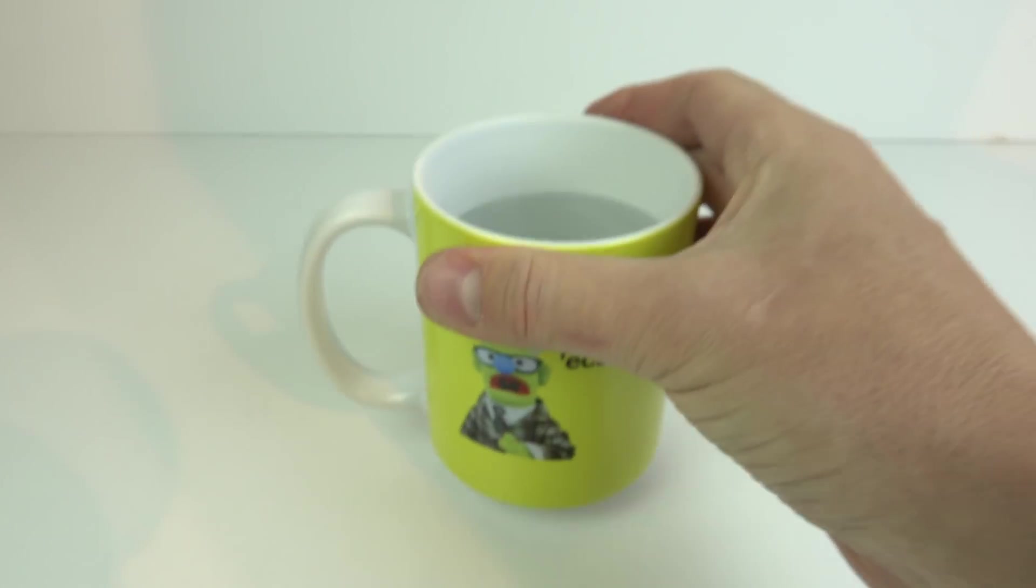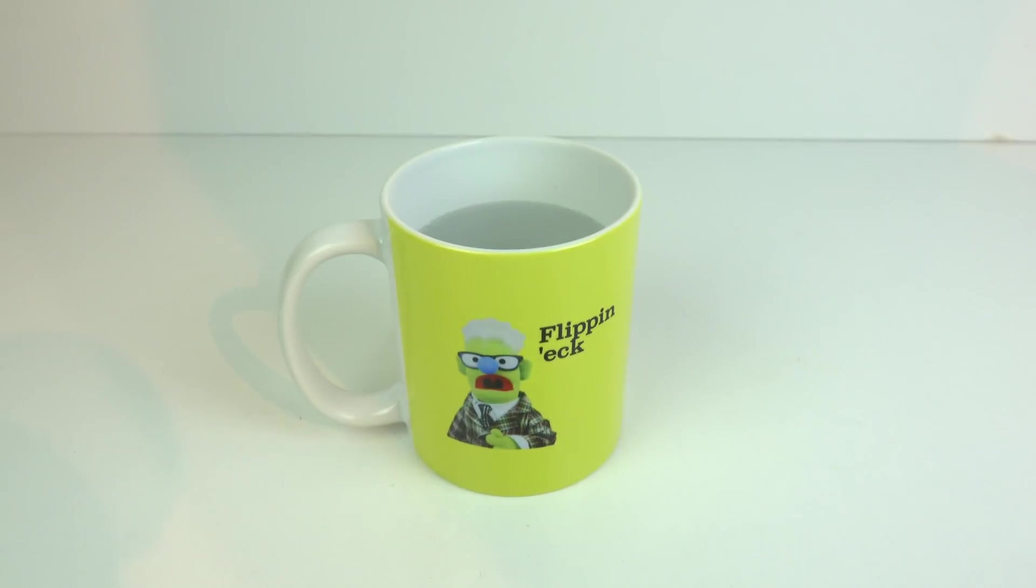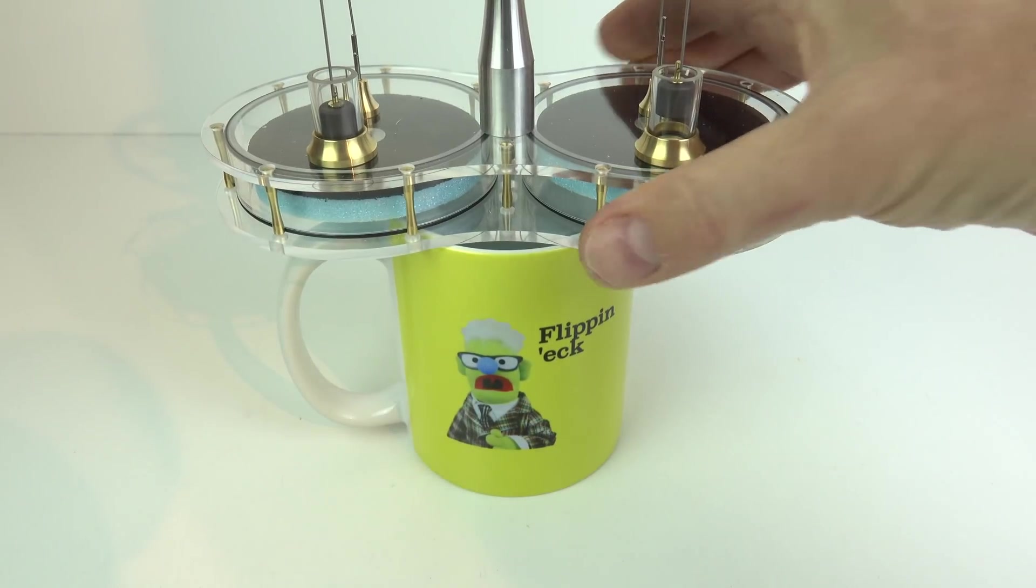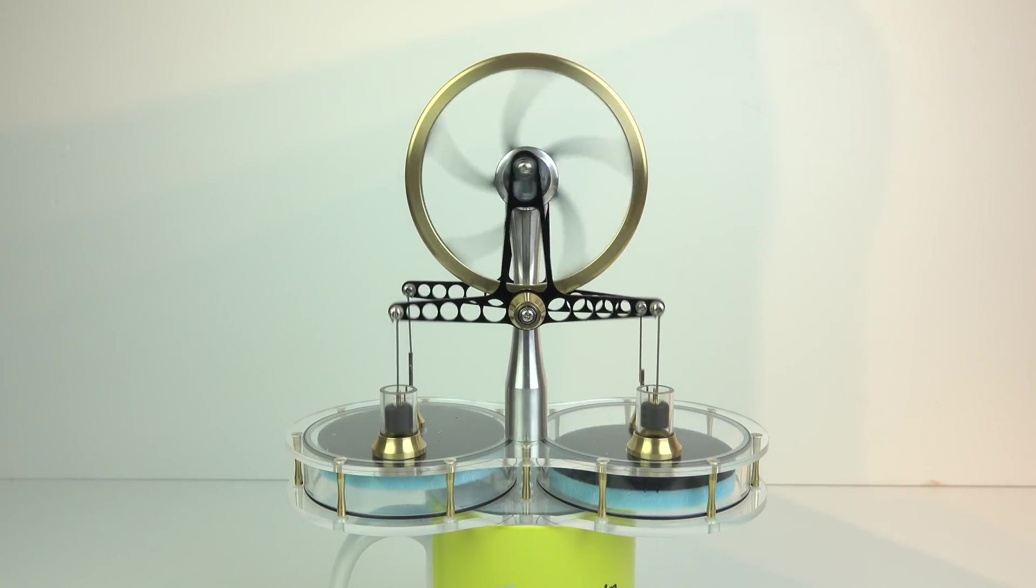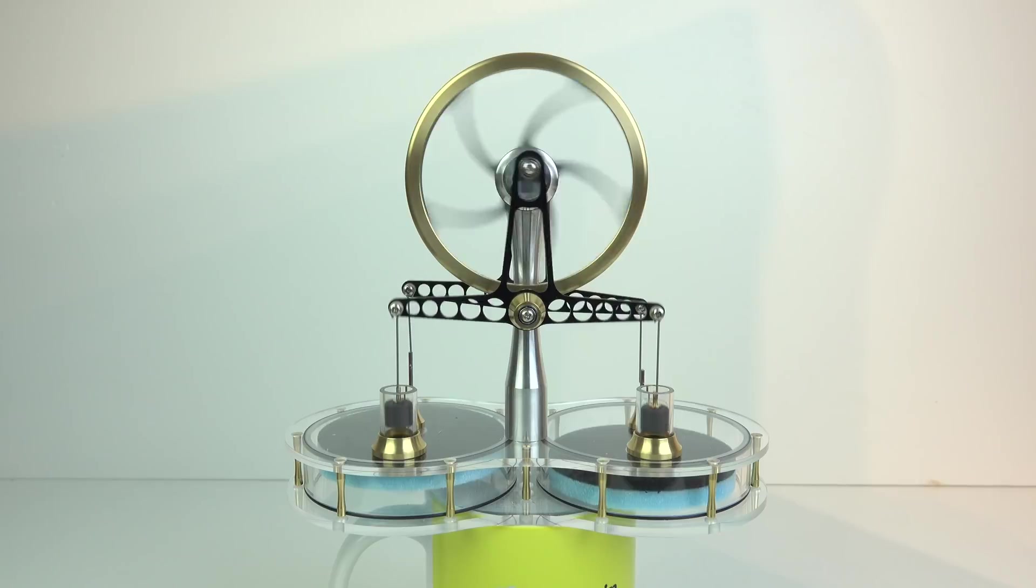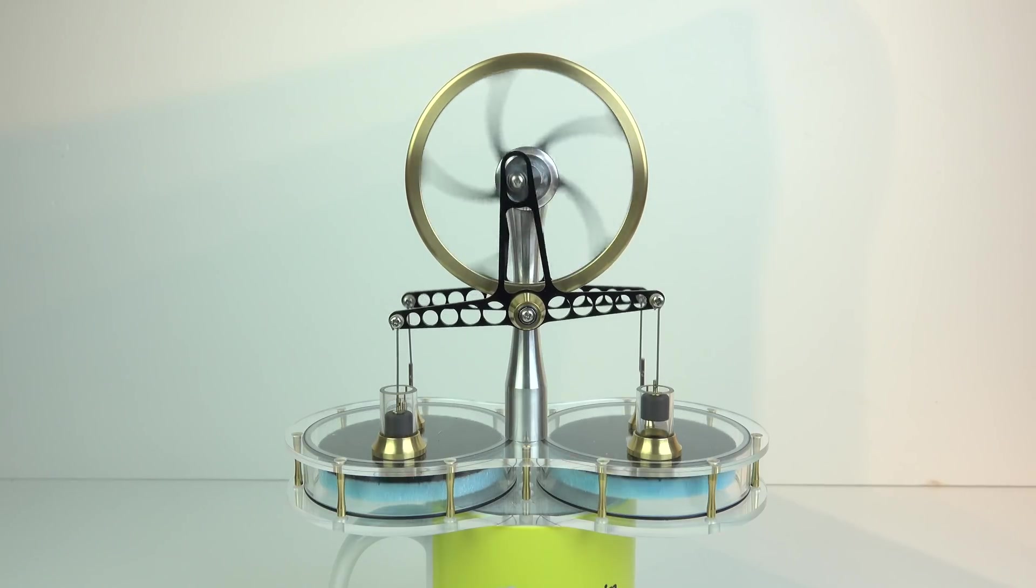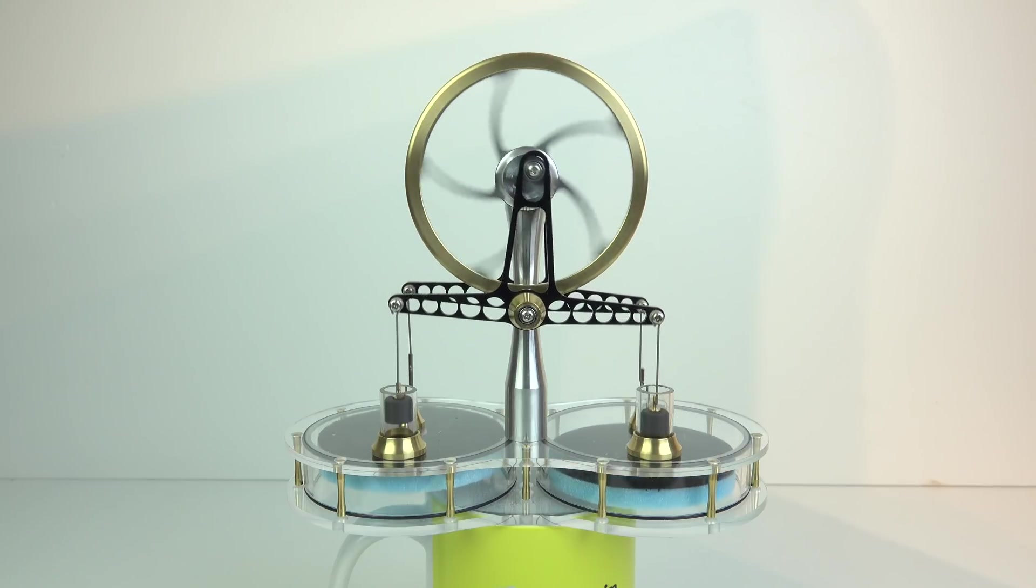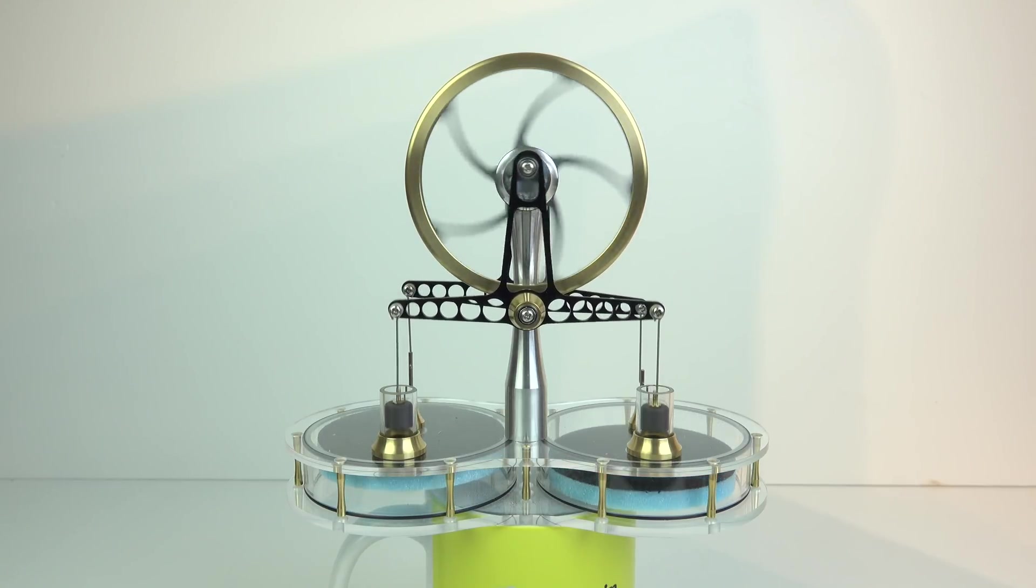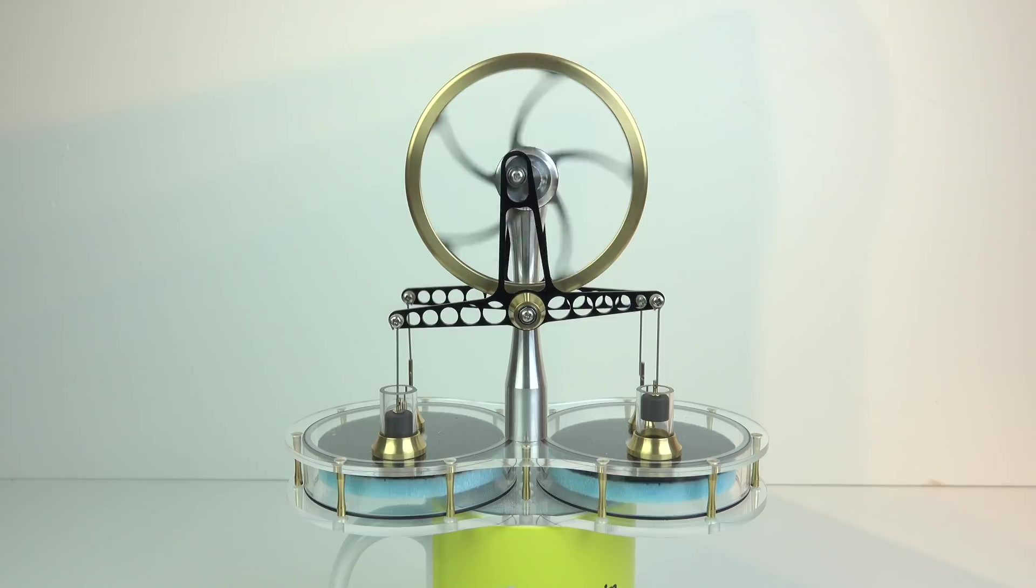Now a sterling engine runs on heat so I've boiled some water put it in this mug put the sterling engine on the top you just got to wait a couple of minutes for the bottom of it to heat up and then you can spin the wheel and fingers crossed it should carry on moving. Now it was looking a bit touch and go there for a minute but I can see it is now starting to move under its own steam or I should really say its own power and I'll explain how it does that.